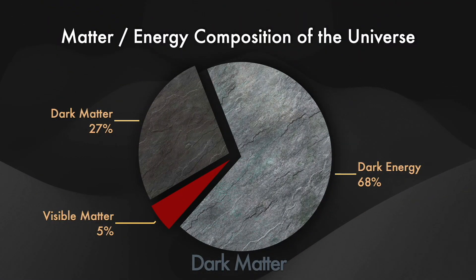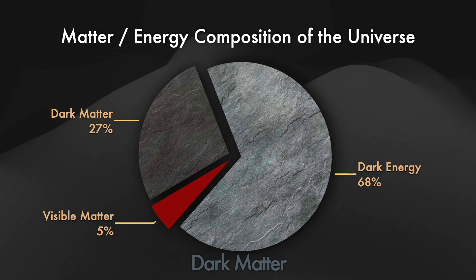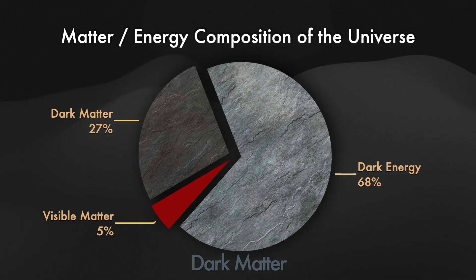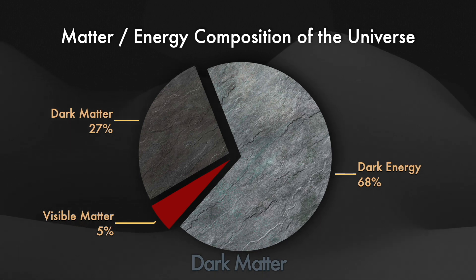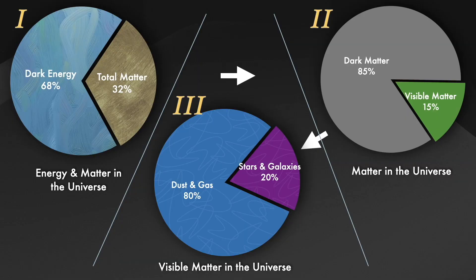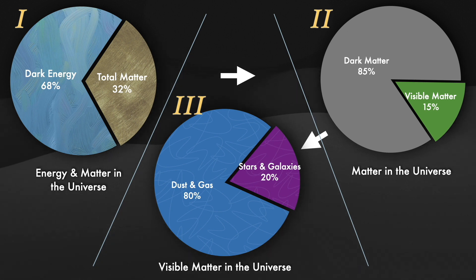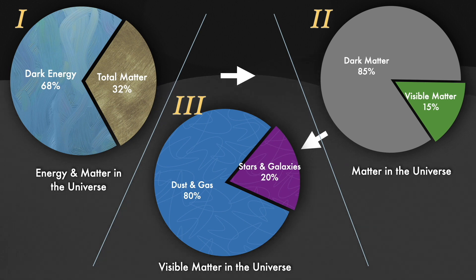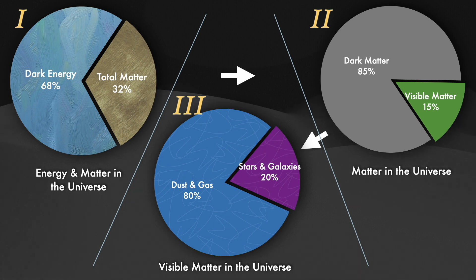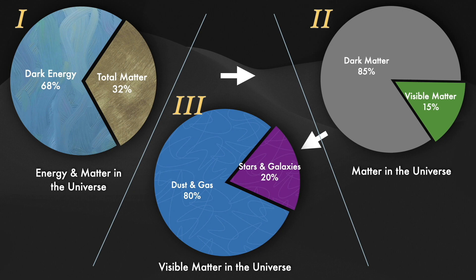Let's talk about the composition of matter and energy in the universe. Only 5% of matter is visible matter — this constitutes all the galaxies, clusters of galaxies, stellar dust and gas. 27% of matter is dark matter. The remaining 68% is dark energy. In this slide, there are 3 pie charts. The first shows total matter and total energy at 32% and 68% respectively. The second focuses on total matter: only 15% is visible, the rest 85% is dark matter. The third pie chart shows that out of all visible matter, stars, galaxies and clusters of galaxies constitute only 20%, with the rest being dust and gas.